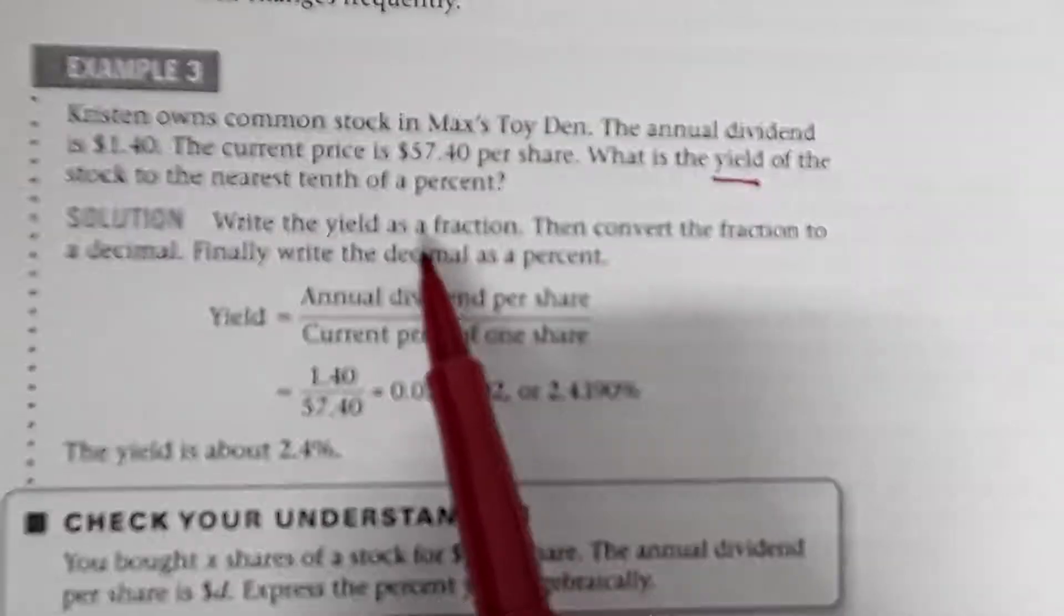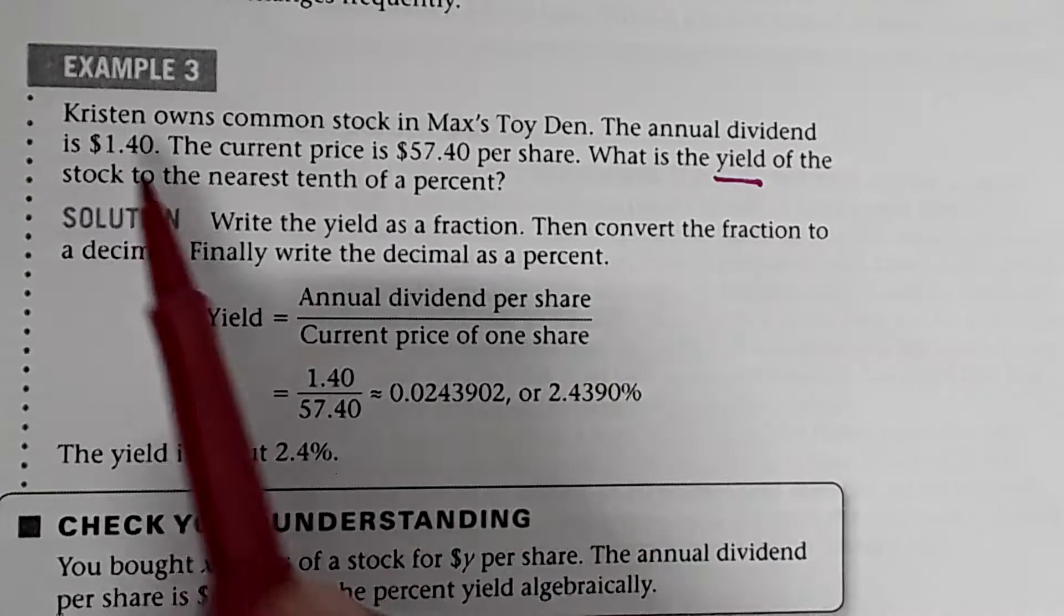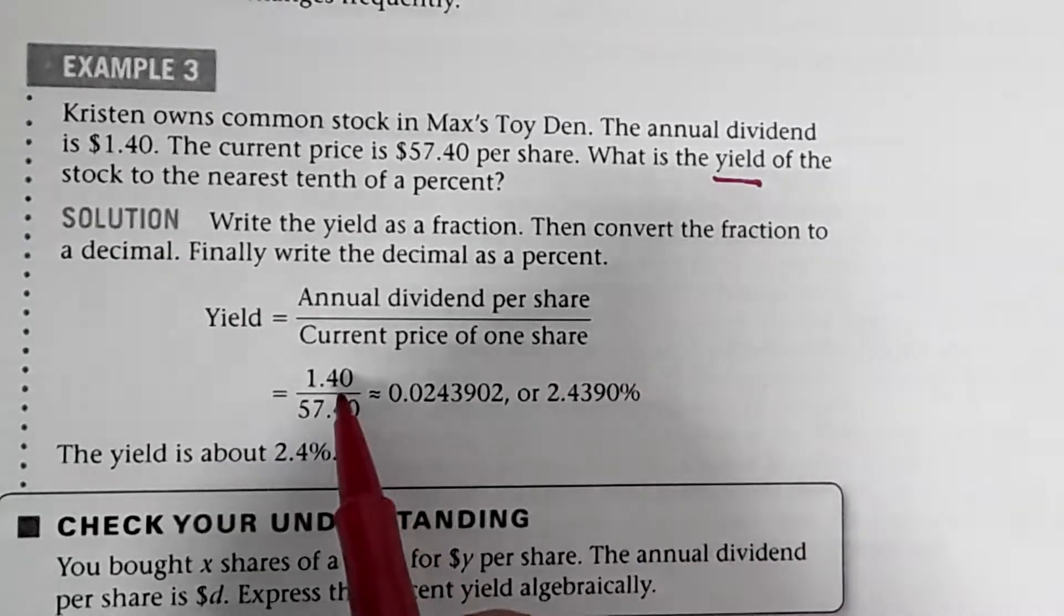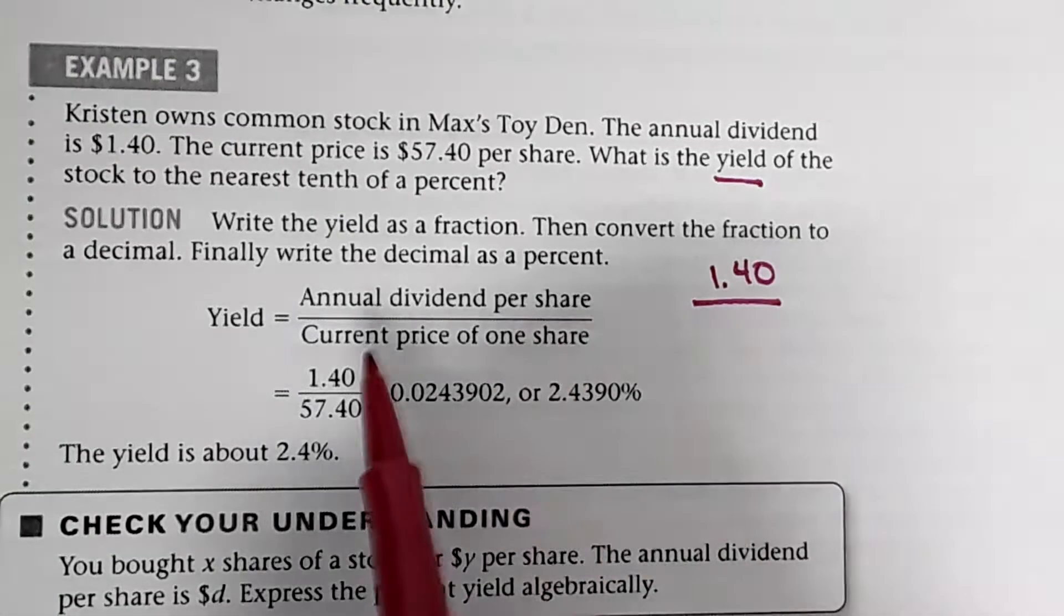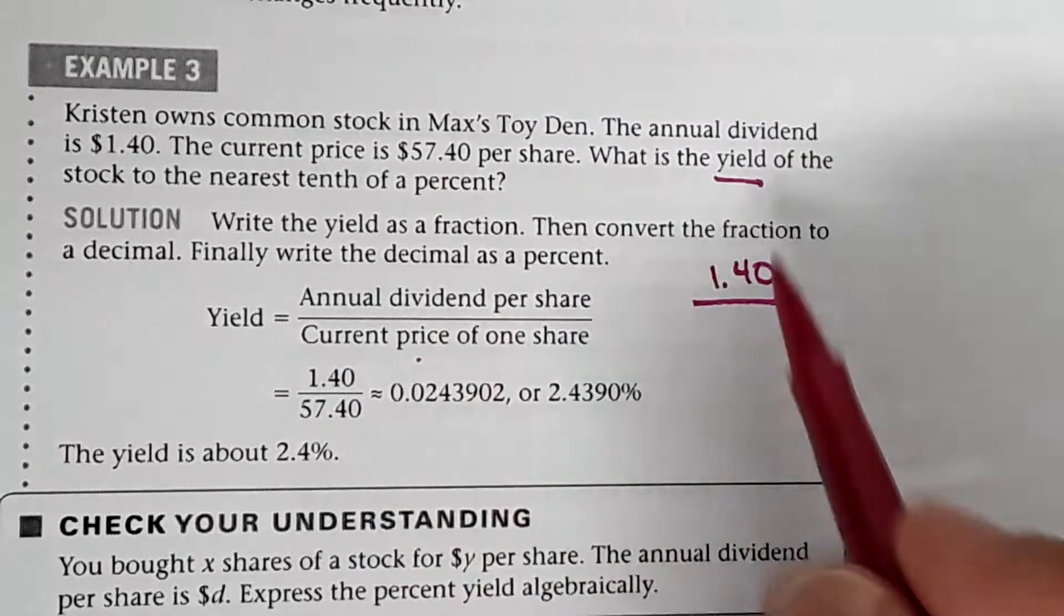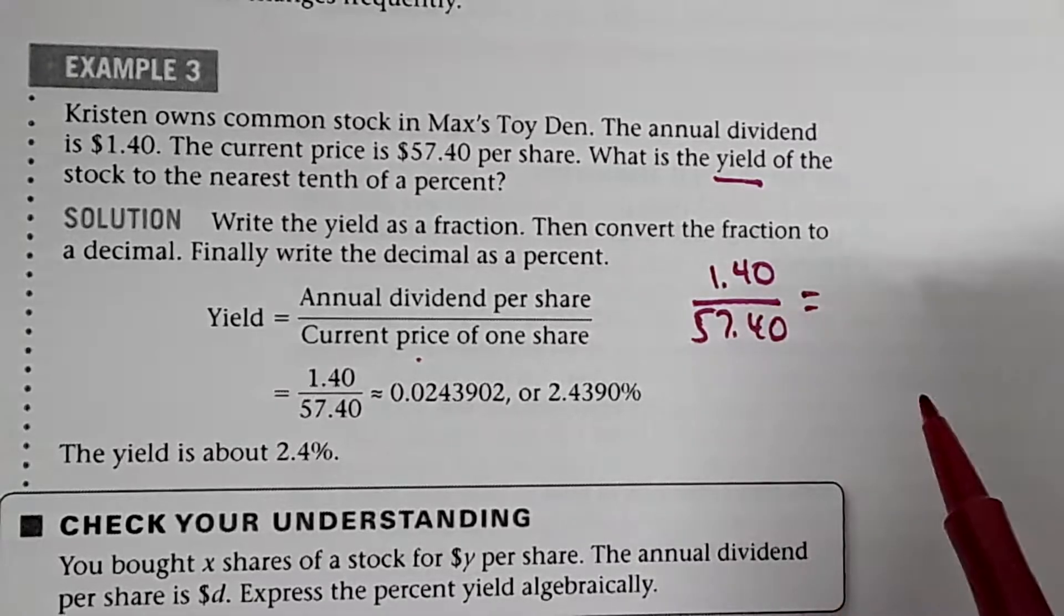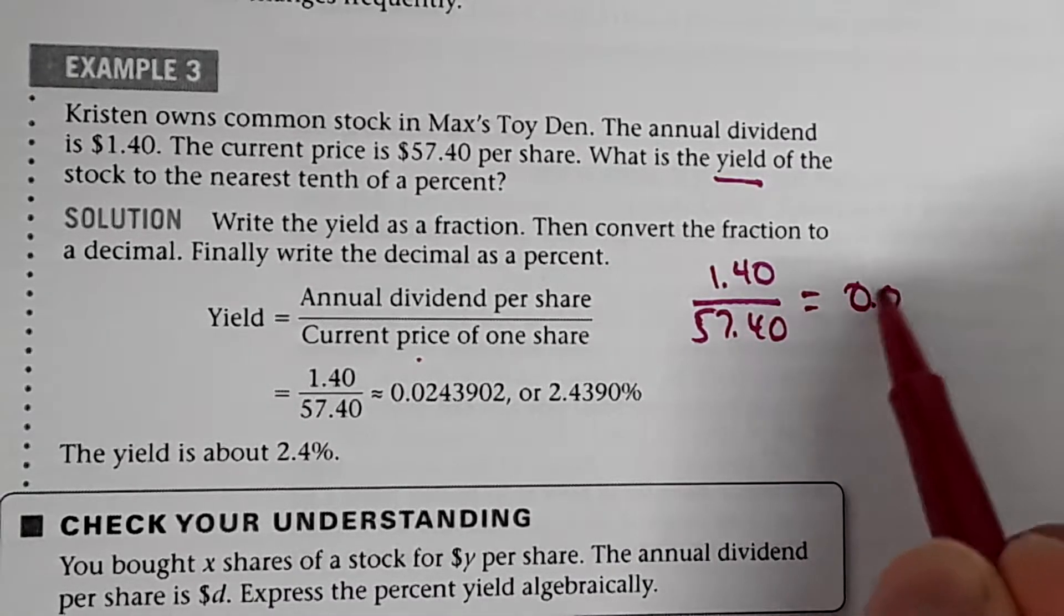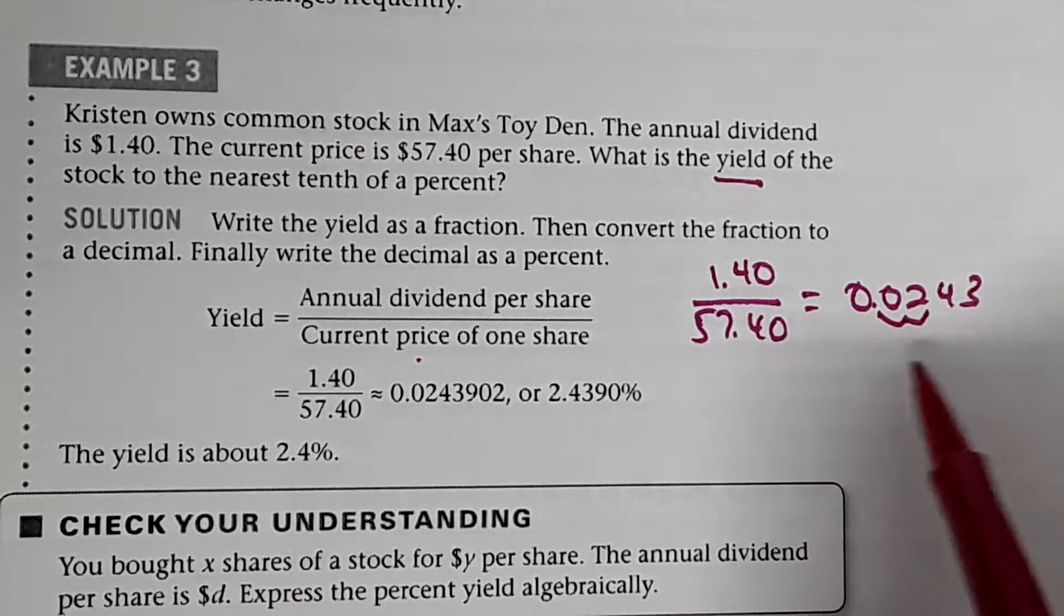Write the yield as a fraction. You want the annual dividend per share. Well, the annual dividend per share is $1.40. It's written right there, over the current price. When you divide those, you get 0.0243. And when you round to the nearest tenth of a percent, remember you're going to move two places. So 2.4% would be the current yield.